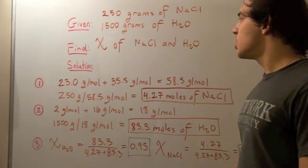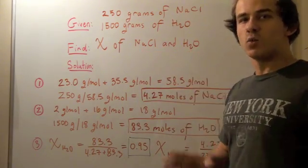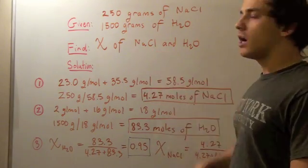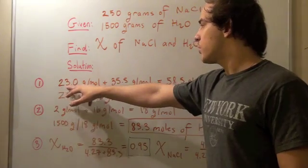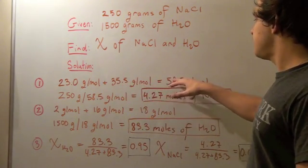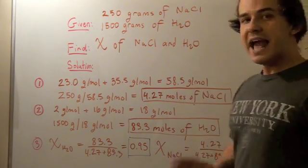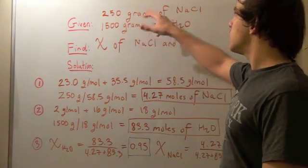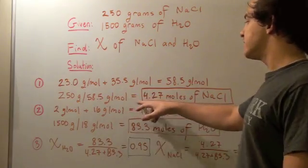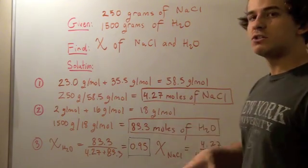In order to find the number of moles, we have to find the molecular weight of each compound. To find the molecular weight of NaCl, we add the atomic weight of sodium and the atomic weight of chlorine. That gives us 23.0 grams per mole plus 35.5 grams per mole, which gives us 58.5 grams per mole — this is our molecular weight. We then take our weight, 250 grams of sodium chloride, divide by the molecular weight, and that gives us 4.27 moles of sodium chloride found within the solution.